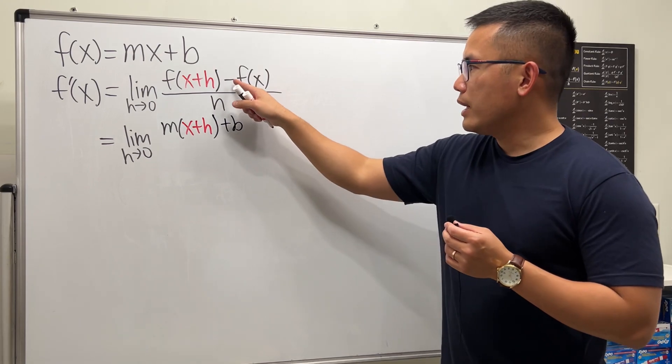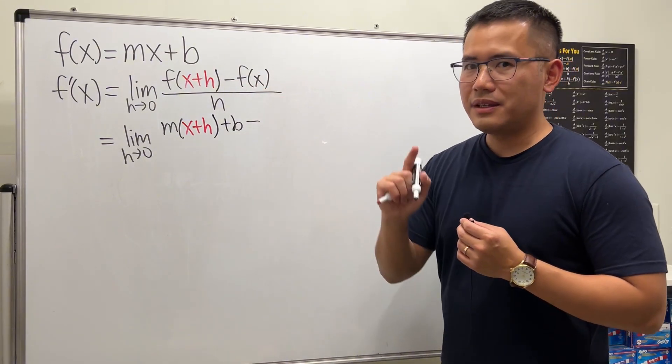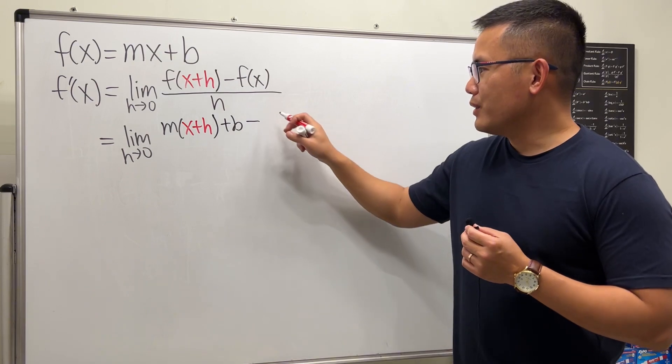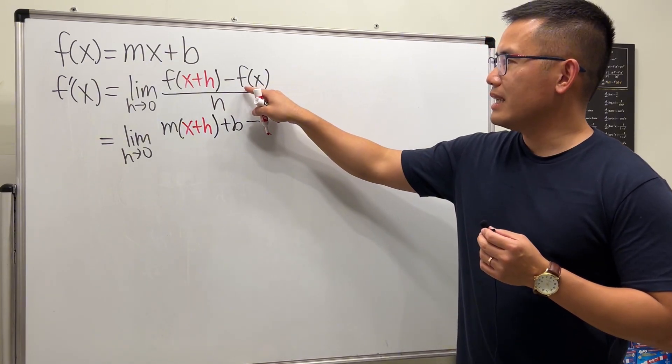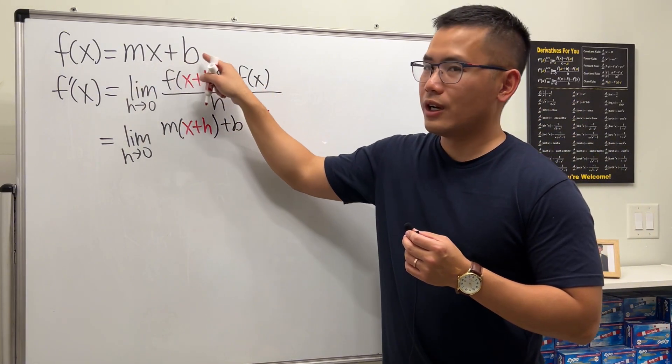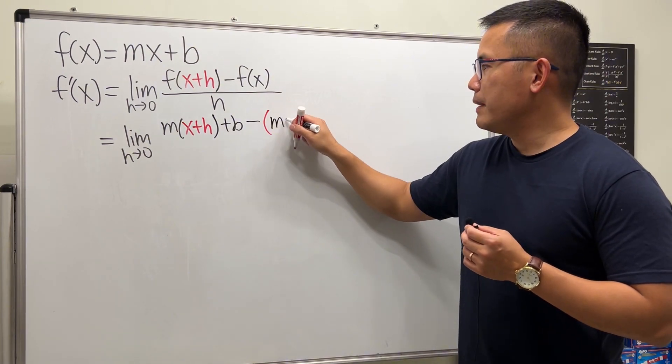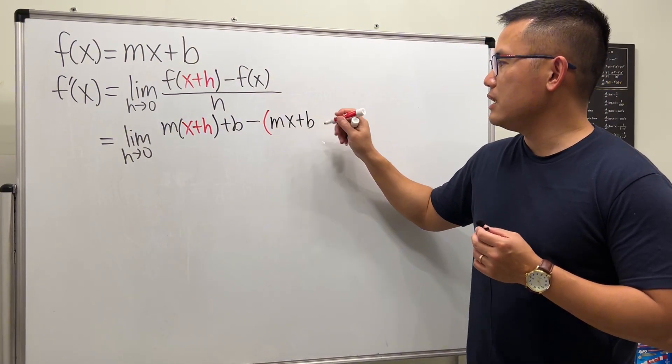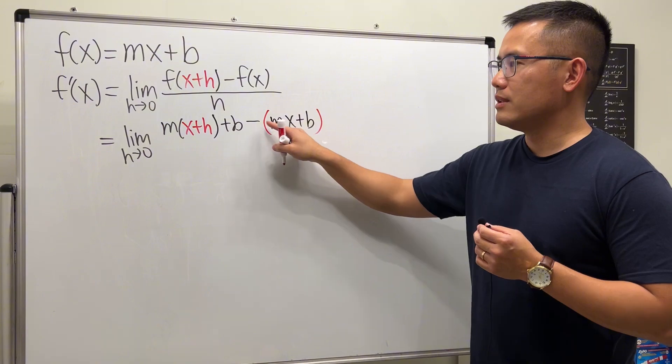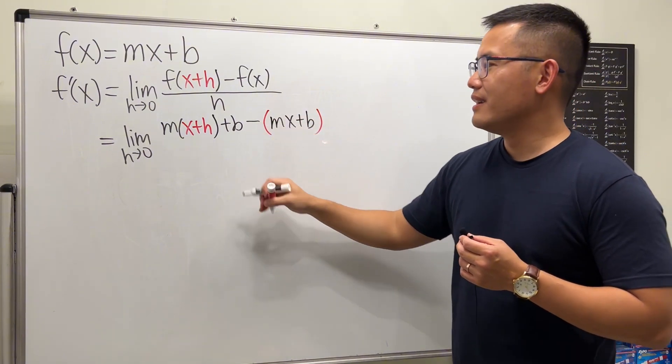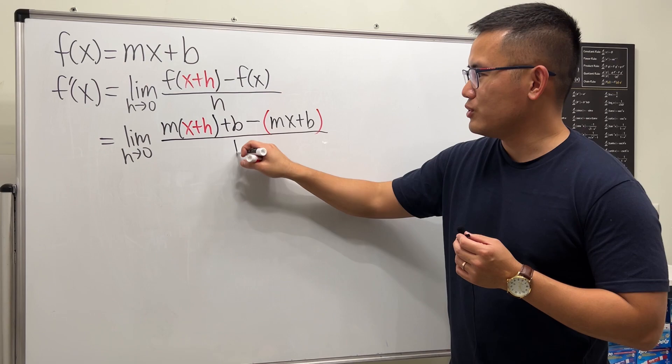Then we're going to minus f of x. But here's the common mistake: go ahead and put down parenthesis, because f of x has two terms, mx plus b. So in fact, we will have to distribute the negative. So be careful with that. And all divided by h.